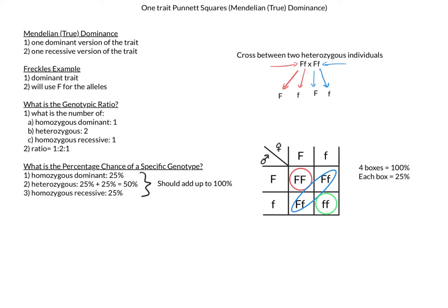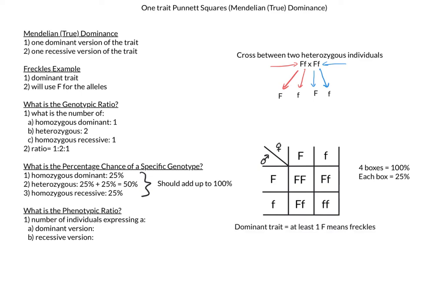Now I can also look at this from the phenotype side and ask a question such as, what is the phenotypic ratio of the offspring in the cross? Here I am simply worried about how many will express the trait, appear dominant, and how many won't, appear recessive. So, since the trait is dominant, any individual that has at least one big F will express the trait and have freckles.